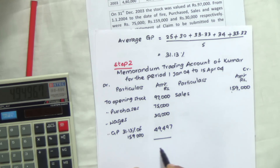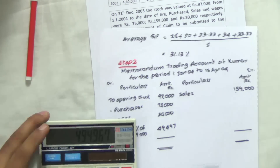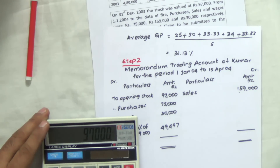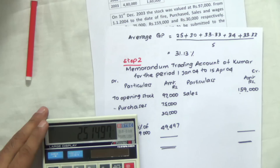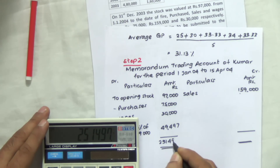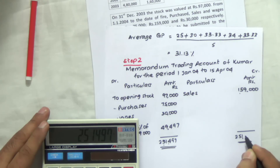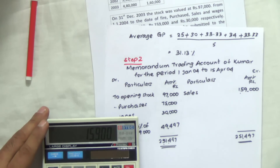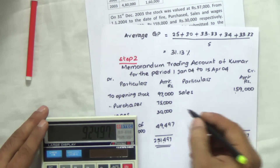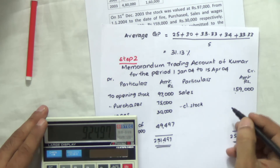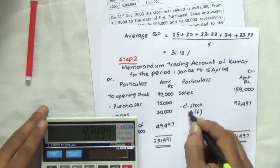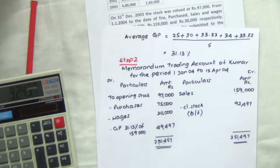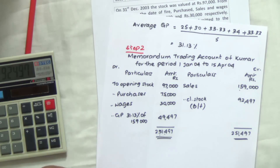Taking a total: 97,000 plus 75,000 plus 30,000 plus 49,497 totals to 2,51,497. Less sales of 1,59,000 gives us a closing stock of 92,497 rupees as the balancing figure. With this, our memorandum trading account is prepared and we have found out the closing stock of 92,497.